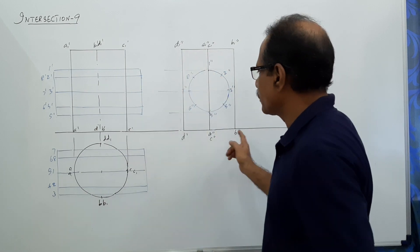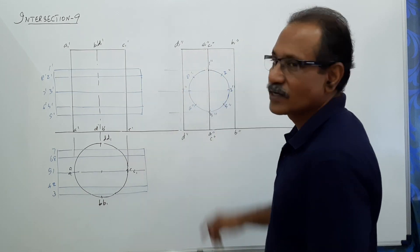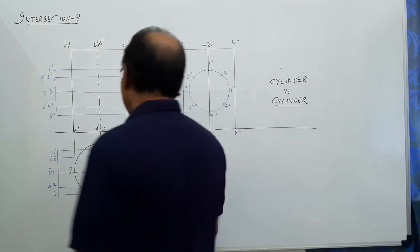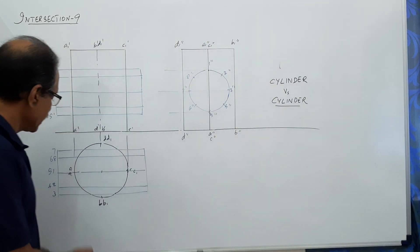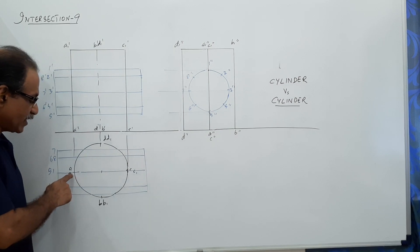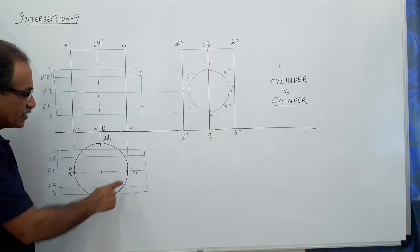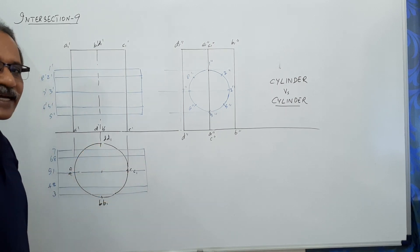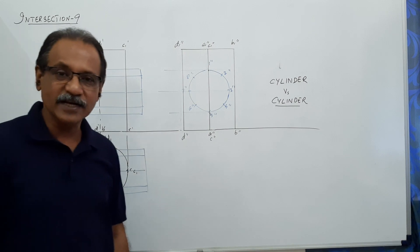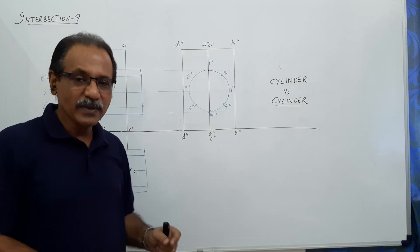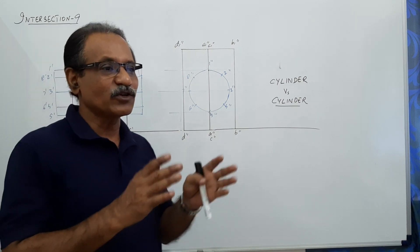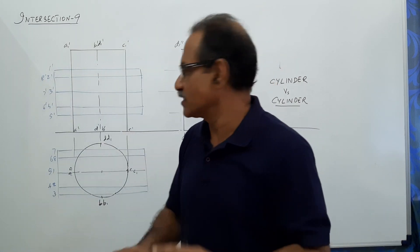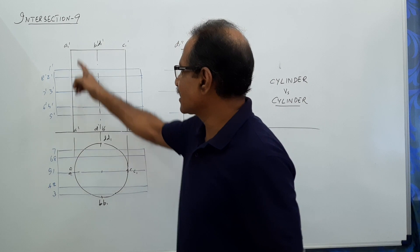The cylinder is 60 mm diameter, 100 mm tall. I have named a-a1, b-b1, c-c1, d-d1 as four generators for the cylinder, because I want to represent the physical boundaries.